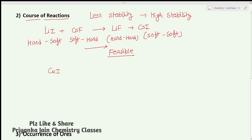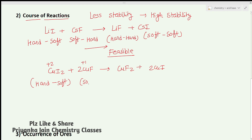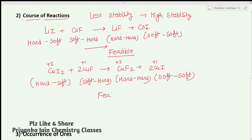Another example: CuI₂ + 2CuF → CuF₂ + 2CuI. Cu²⁺ is a hard acid and I⁻ is a soft base — unstable on the left. Cu⁺ is a soft acid and F⁻ is a hard base — also unstable. On the right, Cu²⁺ (hard) with F⁻ (hard) is stable, and Cu⁺ (soft) with I⁻ (soft) is stable. So this reaction is feasible.